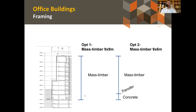For office buildings, there are two main options. Option one is a mass timber building with a nine-by-nine meter grid that runs from upper levels all the way down to meet car park grids — no transfers throughout the building. Option two is a nine-by-six meter grid: simpler for the mass timber component but typically requiring a transfer level to get back to nine-by-nine car park grids, with concrete at ground floor and basement deck.